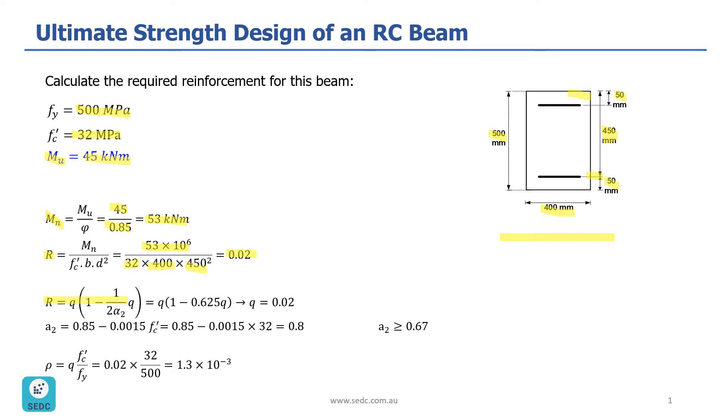Now, with this formula, we can calculate Q. This formula depends on A2, and A2 has a formula, which is equal to 0.85 minus 0.015 times F prime C, which is 32. So, A2 would be 0.8.